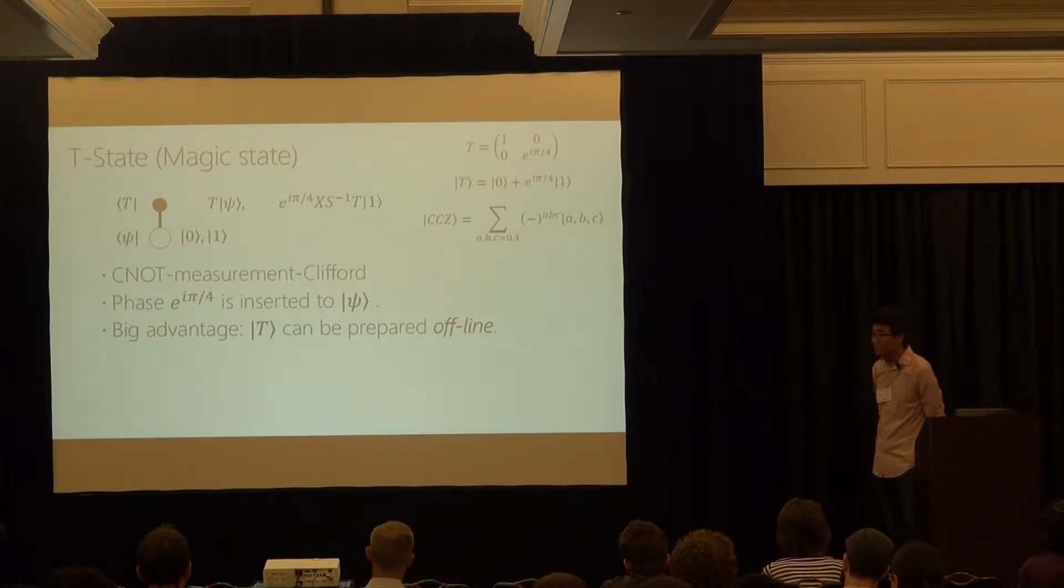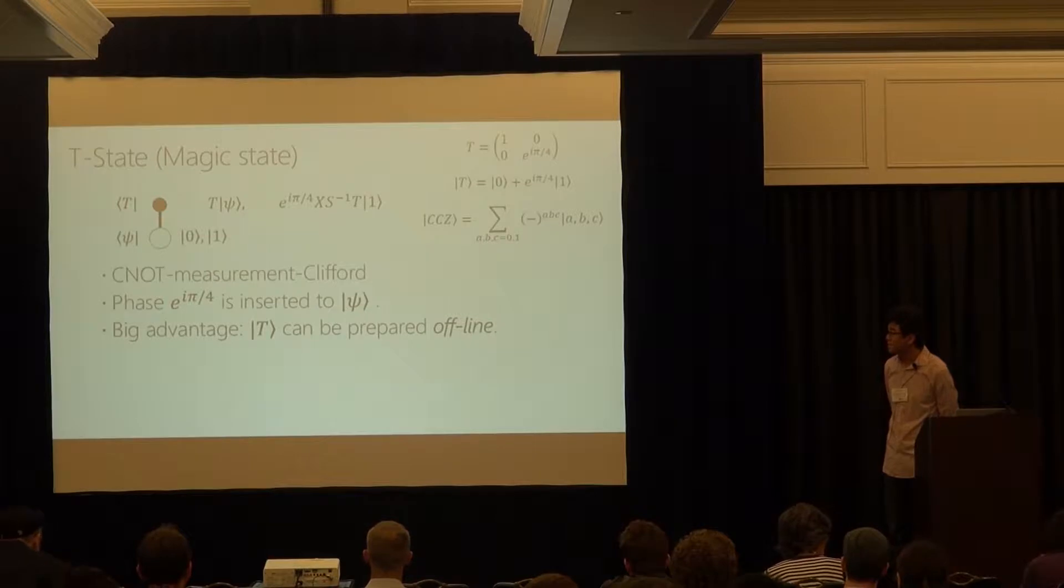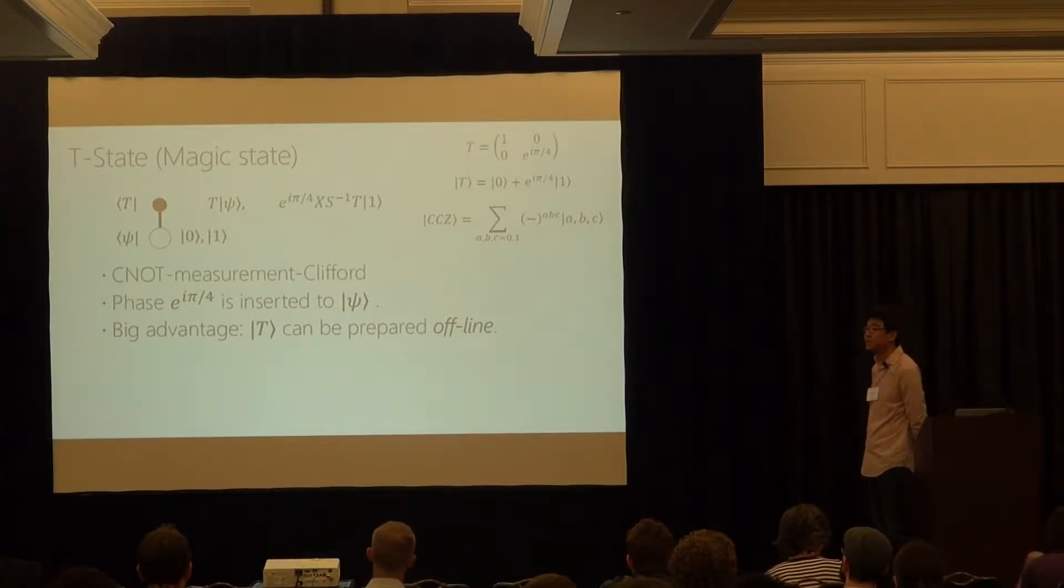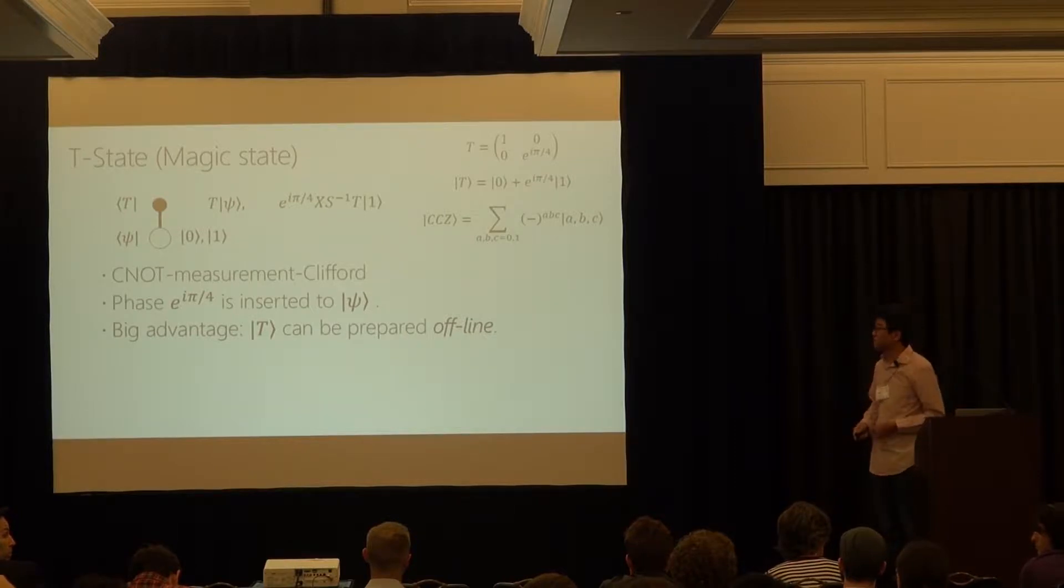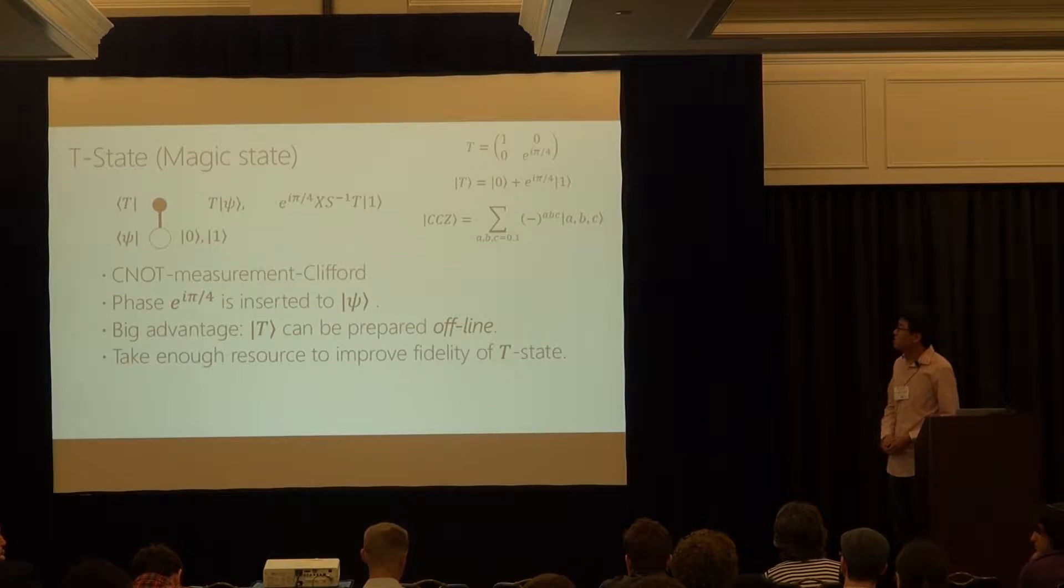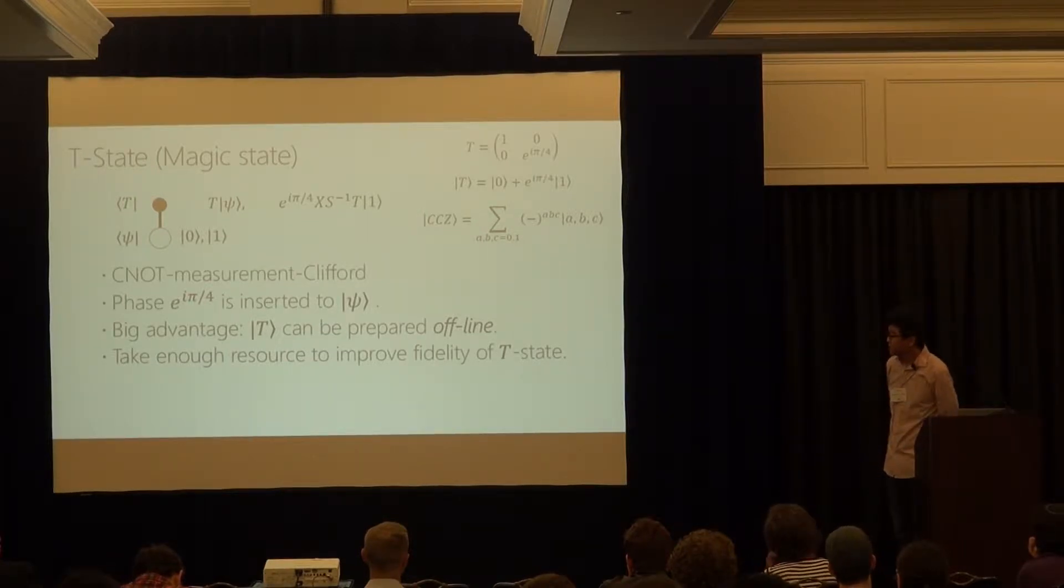And the big advantage of this idea is that only you have to do Clifford operation in real time when you're doing computation, and the preparation of this magic state, the T-state, or C-C-D-state can be done offline, so you try several times until you get some high-fidelity one, and then you make a bunch of them and later use it. And in an architecture where you are producing this T-state, in contrast to the previous talk, you just take a resource to improve the fidelity of this T-state.